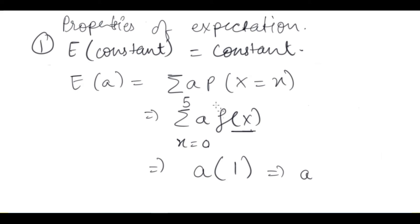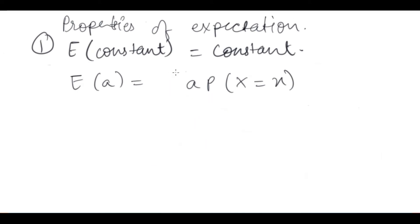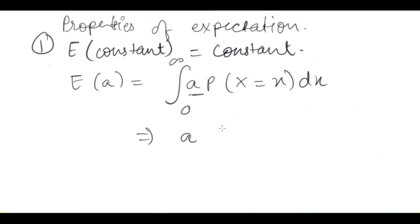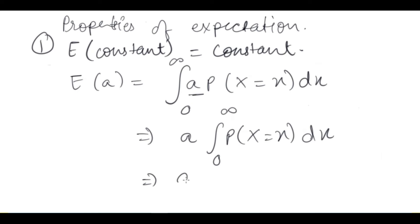If it is discrete, then we look at the range as going to infinity. Even if we sum without a specific range, the constant comes out of the summation. We sum all probabilities from 0 to infinity, and the total probability over all x is 1. So the constant multiplied by 1 gives the constant back — confirming that the expectation of a constant is a constant.